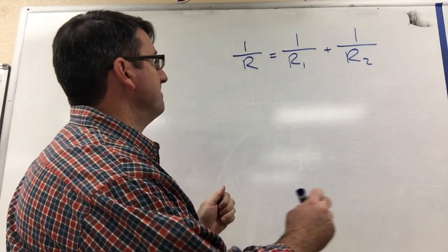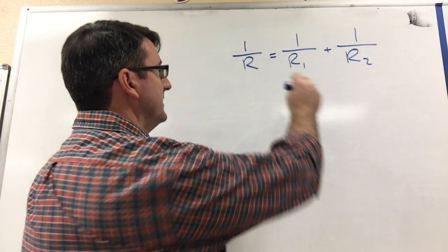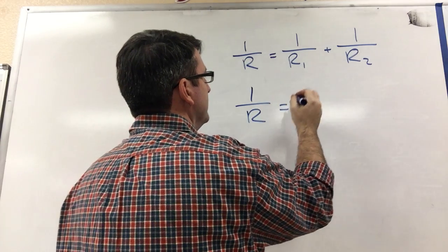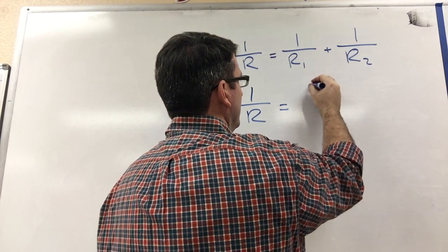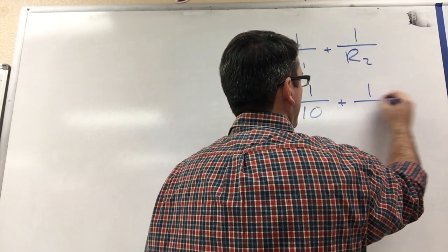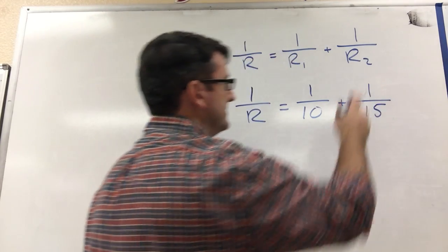So let's plug in. We have 1 over R is equal to 1 over 10 ohms, that's R sub 1, plus 1 over 15 ohms, that's R sub 2.